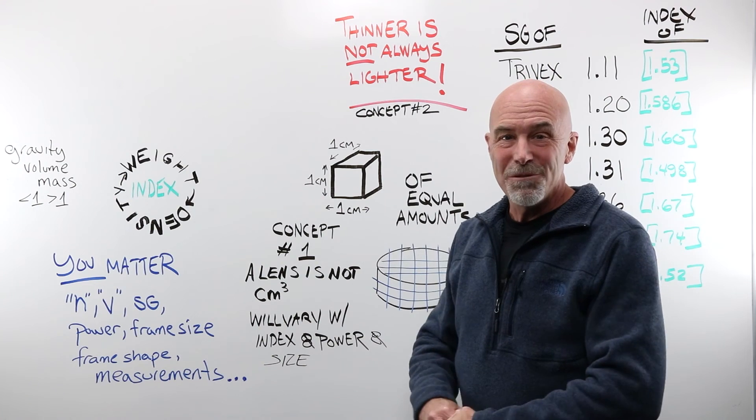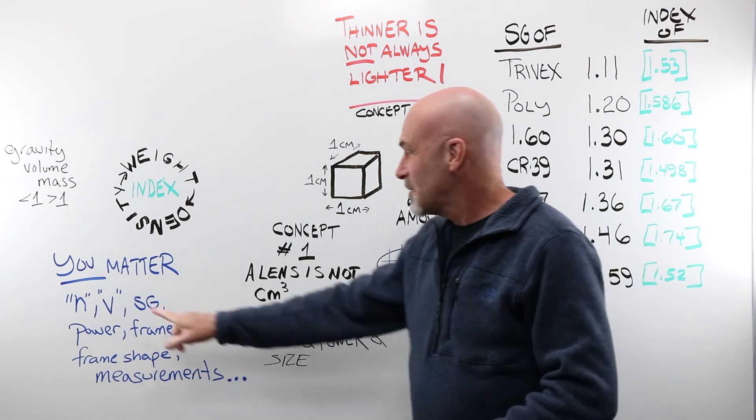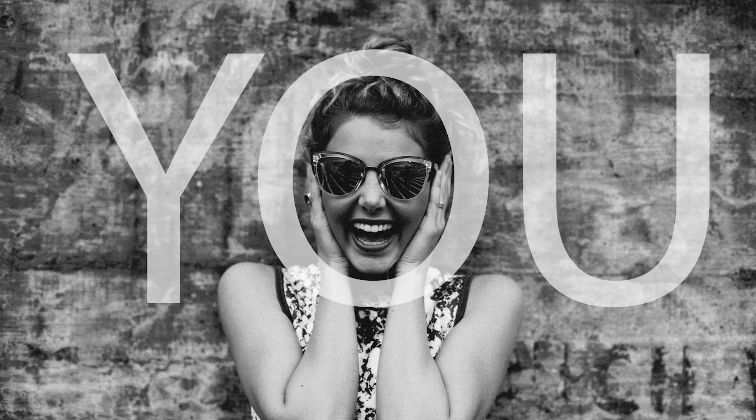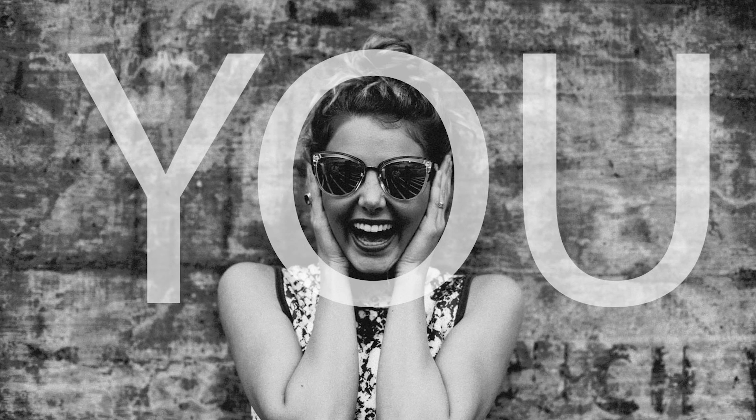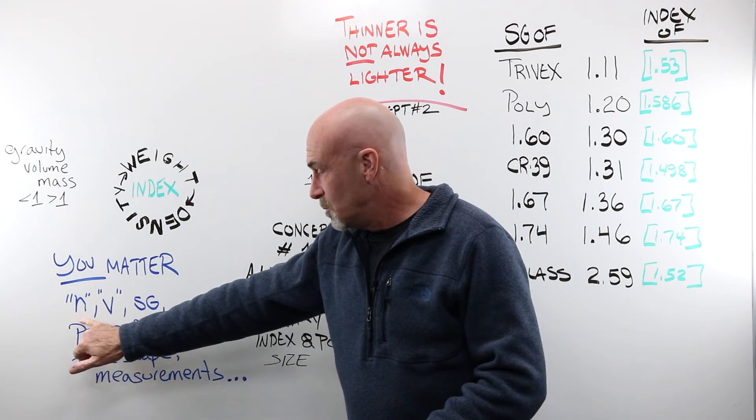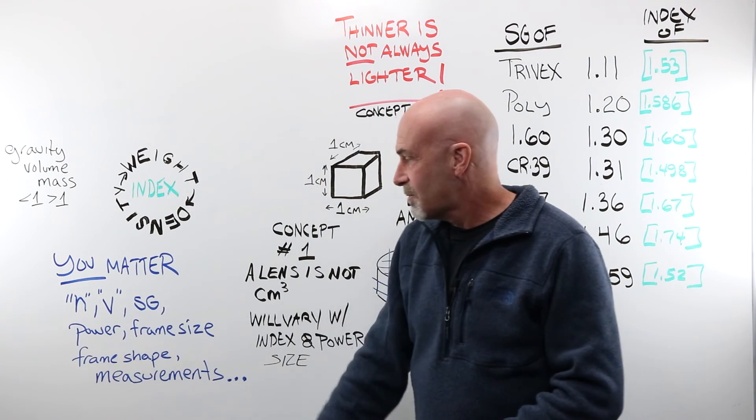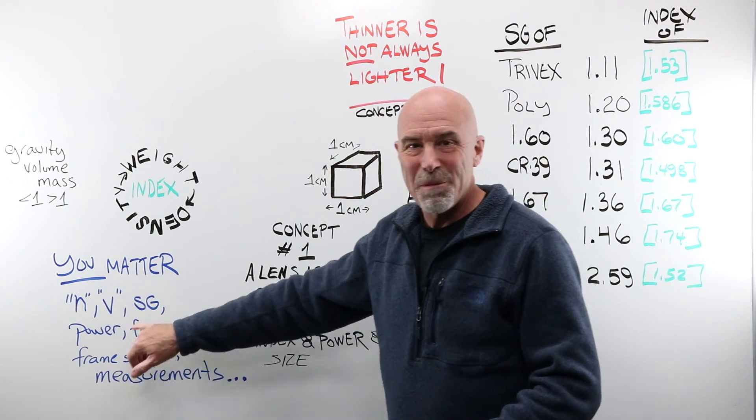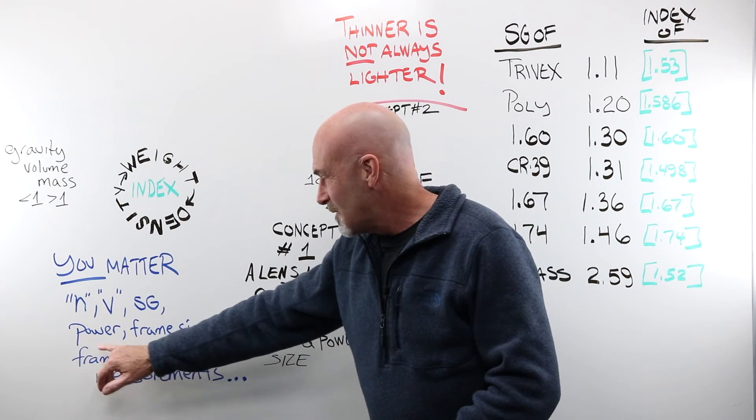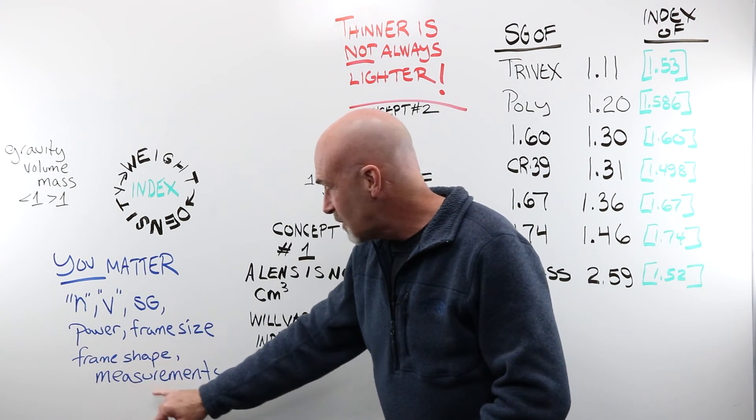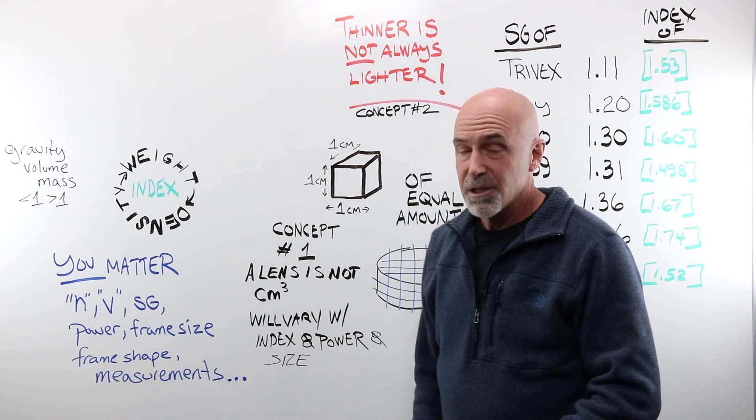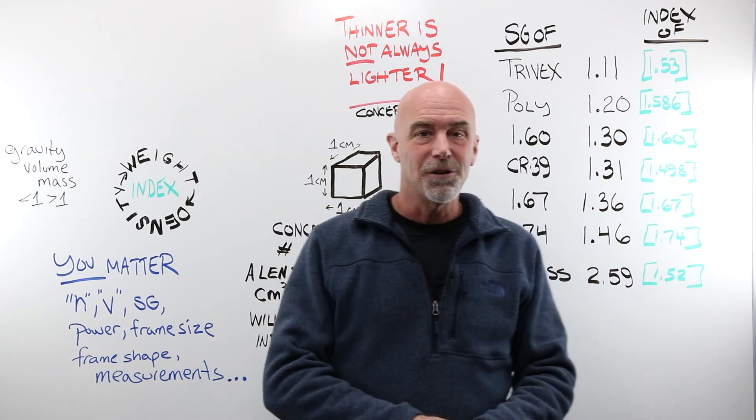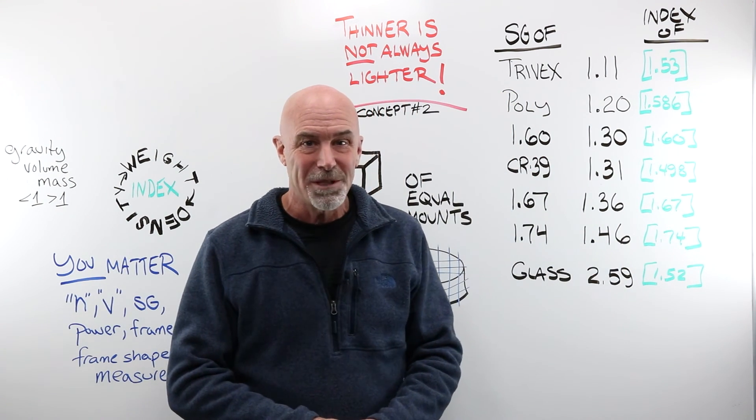What does it all come down to? Well, surprise, surprise, it all comes down to you. You. You matter. As power goes up, we do need to think about the index of refraction. We need to think about the abbey. We need to sort of think about specific gravity. We need to think about power, frame size, frame shape, how to get great measurements, all that good optician stuff that we cover on the OpticianWorks website.